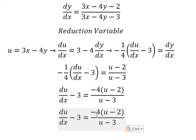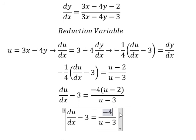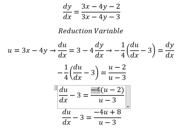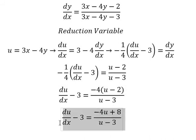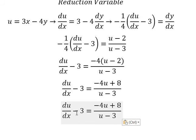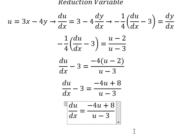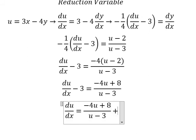And this one we have negative 4u plus 8, because negative 4 multiplied by u and negative 2. Next, I will put negative 3 on the right, and we have positive 3.